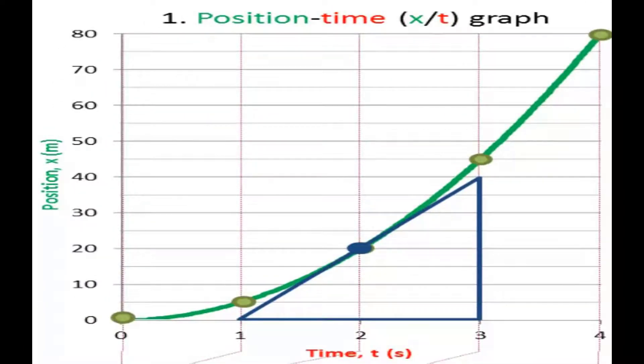Here's a tangent to the graph at 2 seconds. Notice that it touches the graph only at 2 seconds. I can make the triangle as big or as small as I like. I get a more accurate answer if I make a bigger triangle. It's also a good idea to use numbers that will be easy to work with.